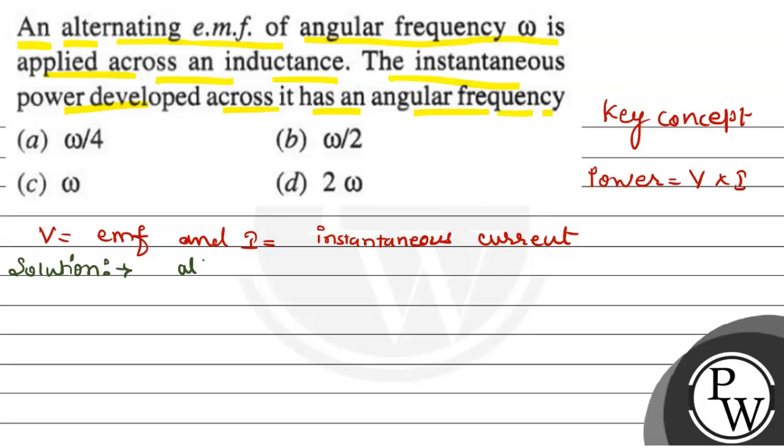The alternating EMF, let's suppose, is V equals to V naught sine omega t. And since the voltage is applied across inductance...